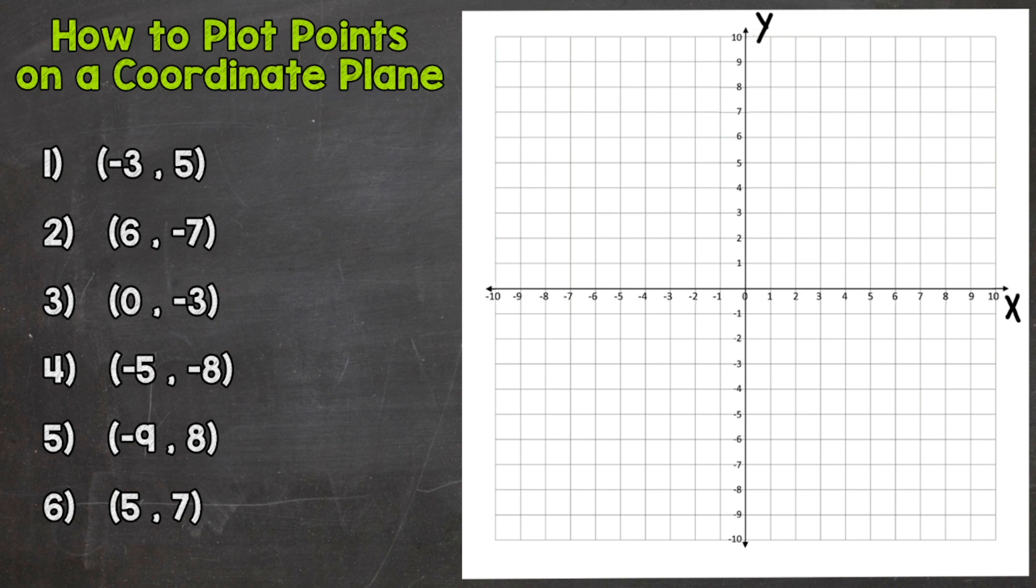So now that we know which one's the x-axis and which one's the y, we can get into plotting these points. So let's jump right in to number one. And we have negative 3, 5 there.